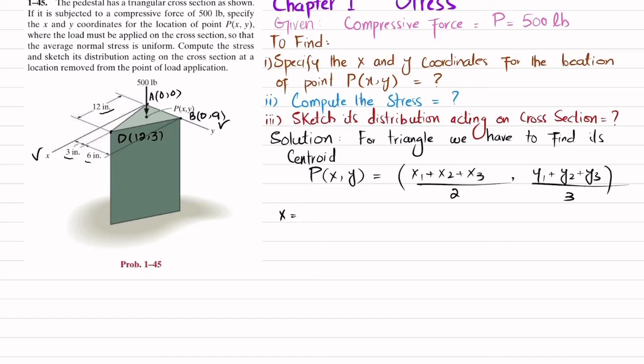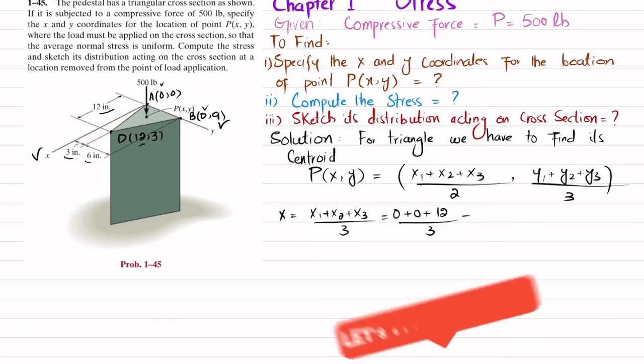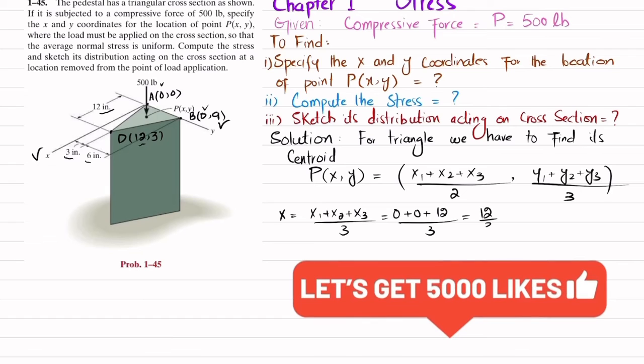So x will be equal to (x1 + x2 + x3) divided by 3. You can see x1 is 0 plus x2, which is also 0, plus x3, which is 12. So 12 divided by 3 equals 4. The x coordinate will be 4.